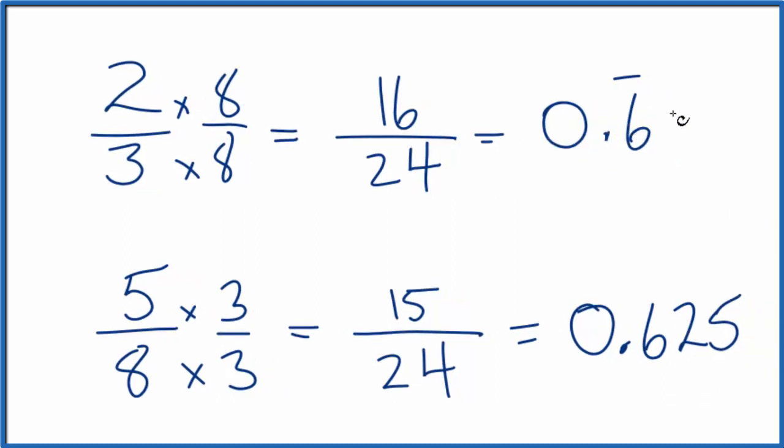So if we think of this as 0.666, and it just repeats, then you can see that 0.666 is bigger than 0.625, and again, 2 thirds is larger than 5 eighths. This is Dr. B comparing the fractions 2 thirds and 5 eighths. Thanks for watching.